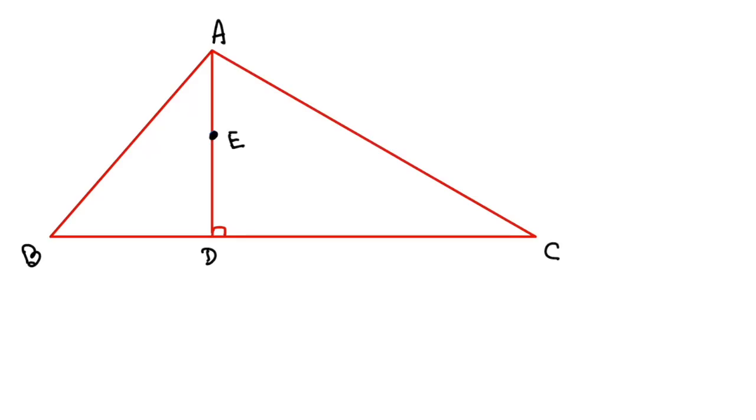We have same triangle ABC where AD is an altitude, E is a point. So join B and E and join E and C.